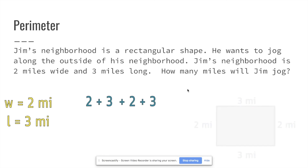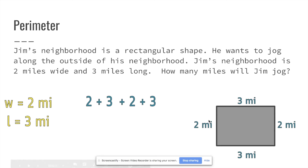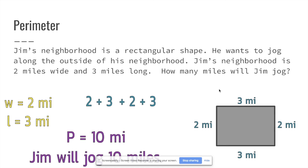Let's draw a picture to make it clear: two miles for the width, three miles for the length, another two miles for the width, and three miles for the length again — because a rectangle has four sides. Two plus three plus two plus three equals ten, so Jim will jog ten miles.